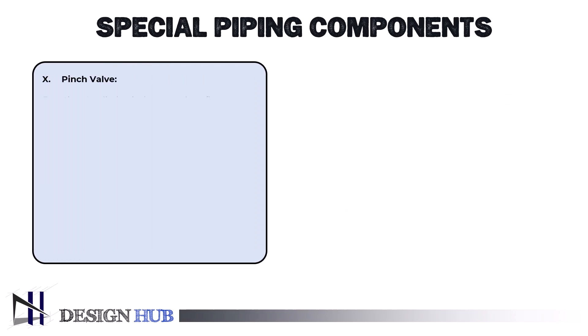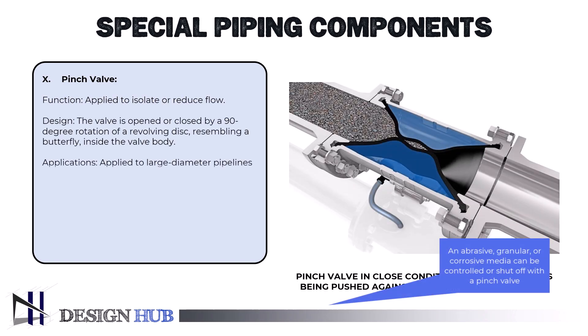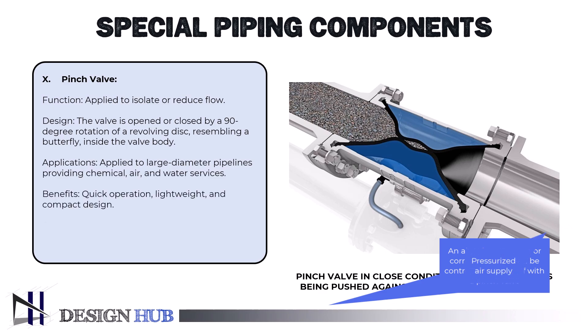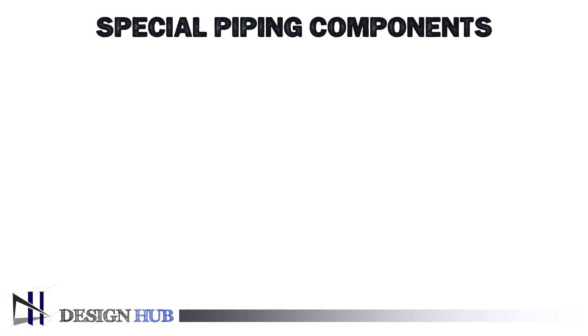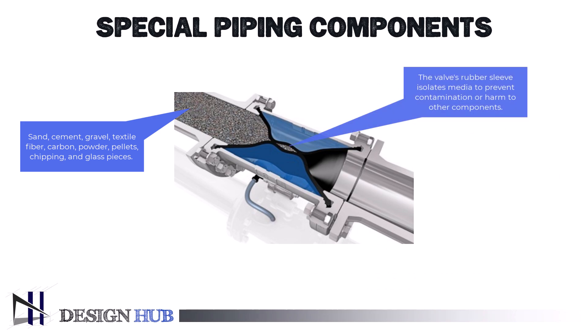Lastly, we will look at the pinch valve. An abrasive, granular, or corrosive media can be controlled or shut off with a pinch valve, which is a two-way valve. The valve can be opened or closed using pressured air. A broad variety of media can flow through the bore when the valve is in the open position, where it is unrestricted. To prevent contamination or harm to the valve's other components, the flexible internal rubber sleeve isolates the media from the rest of the valve. An air-operated pinch valve consists of an elasticized reinforced rubber hose, a housing, and two socket end caps, also known as flanges.